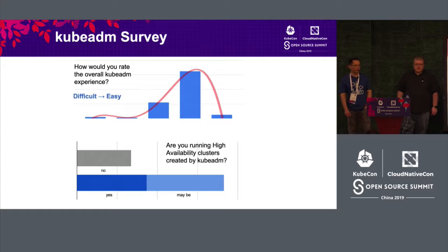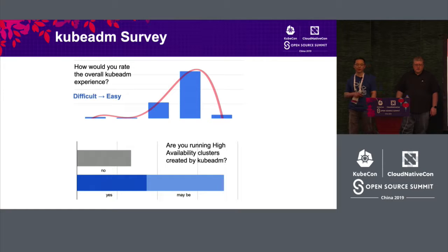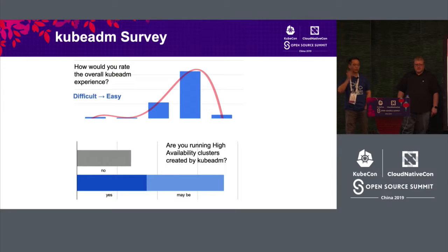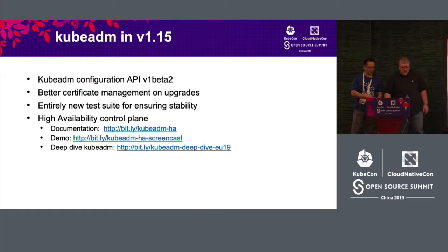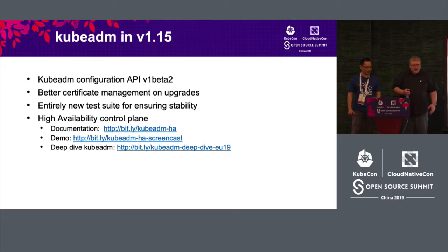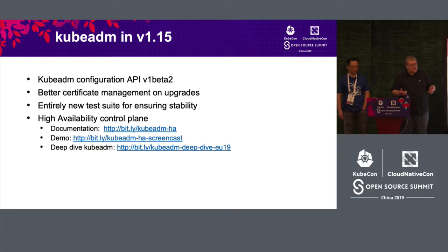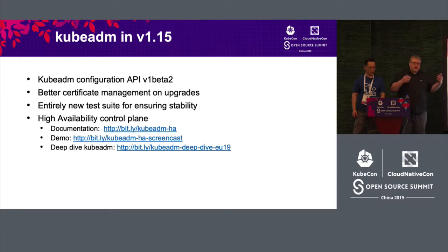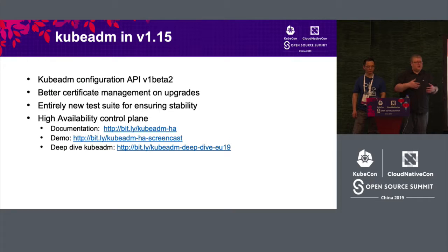The general feedback we received is that the usability is very good — people like using KubeADM to bootstrap their clusters. The most common feedback we get concerns high availability, which was a gap in KubeADM. In the most recent releases we have significantly improved HA. Speaking of the 1.15 release which came out just a couple of days ago: the configuration API for KubeADM reached the beta 2 level. We released beta 1 in 1.13, and after a couple of releases where people identified missing or unhelpful fields, we improved the API.